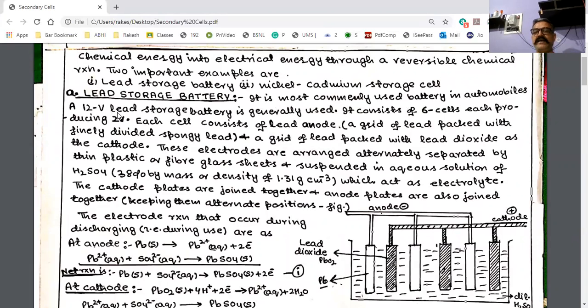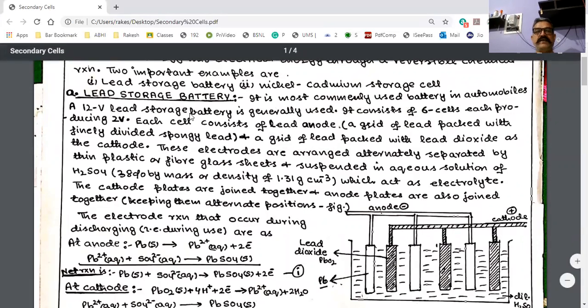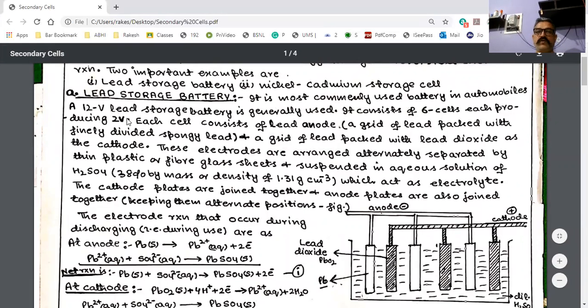But one cell of this lead storage battery produces only 2 volts. It consists of 6 cells, each producing 2 volts. This 12-volt lead storage battery. What is the construction of this battery?